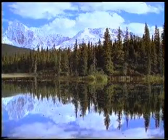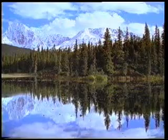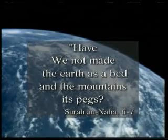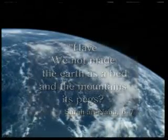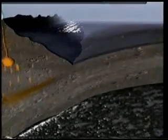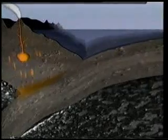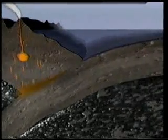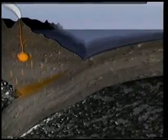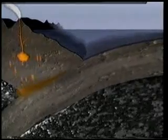In a verse, this role of the mountains is pointed out through a comparison with pegs. Mountains clench the plates in the earth's crust together by extending above and beneath the earth's surface at the conjunction points of these plates. In this way, they fix the earth's crust and prevent it from drifting over the magma stratum or among its plates. Briefly, we may liken mountains to nails that keep wood pieces together.